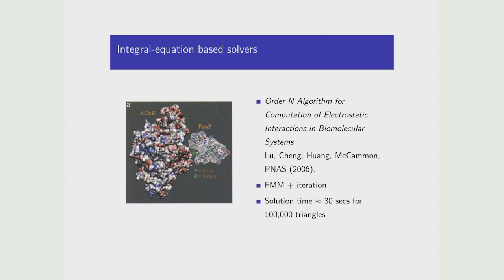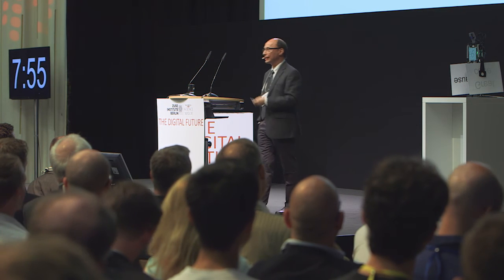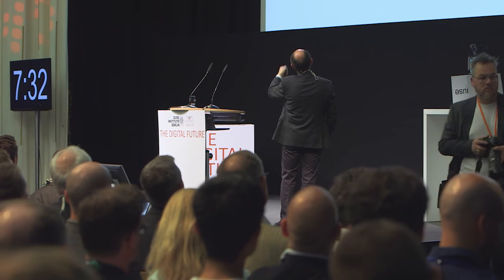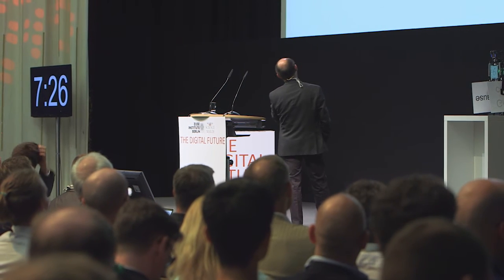These algorithms are useful for ubiquitous force laws — gravitation, electrostatics, fluid flow, magnetostatics, elasticity. A group developed a fast multipole-based code for molecular interactions, asking whether you can steer the interaction between a protein and its ligand — in this case acetylcholinesterase and fasciculin, a neurotoxin that binds to that enzyme. With these algorithms, you can do such calculations with hundreds of thousands of triangles in only 30 seconds on a workstation.